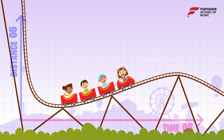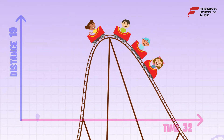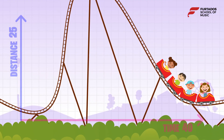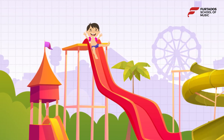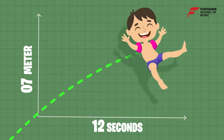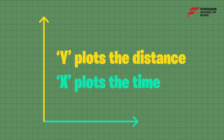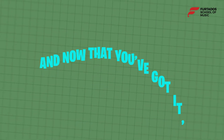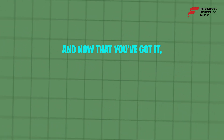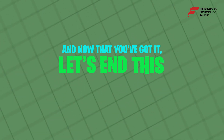The graph of distance and time helps you read the ups and downs of the climb — of how far an object has travelled in a given time. The y plots the distance, the x plots the time. And now that you've got it, let's end this rhyme.